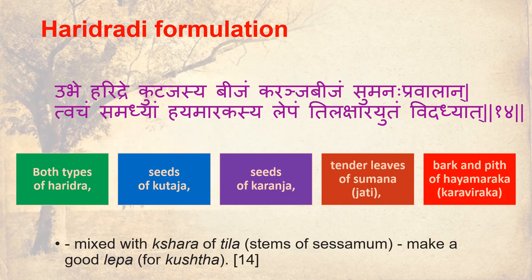Haridra Formulation: Ube Haridrae, seeds of Kudaja, seeds of Karanjabhe, tender leaves of Sumana, Prawaala, Tvajam, Samadhyam — bark and pith of Hayamaraga mixed with Kshara of Tila, stems of seeds — make a good lepa for Kushta.